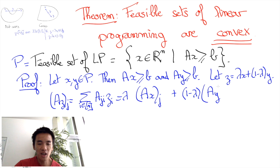In other words, the jth coordinate of AZ is going to be itself a convex combination of the jth coordinates of AX and AY. But we know that the jth coordinate of AX is greater or equal to b_j and the jth coordinate of AY is greater or equal to b_j as well.